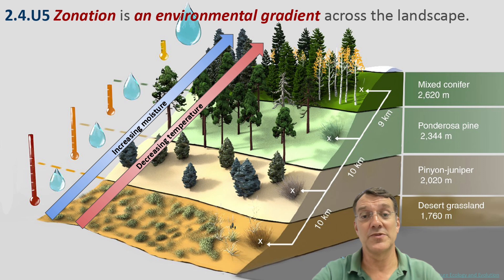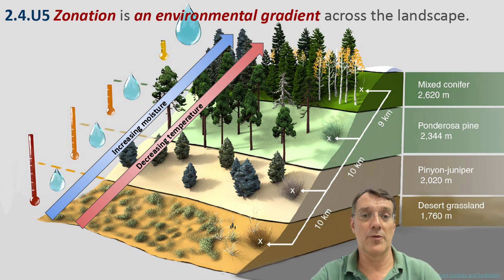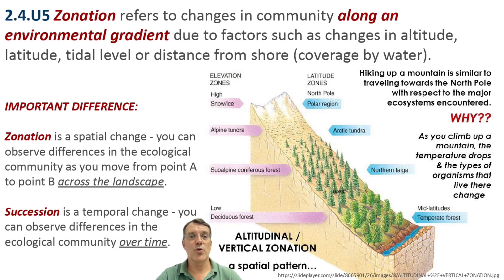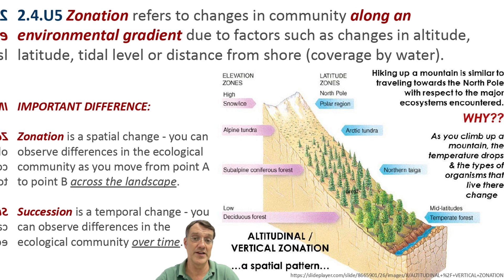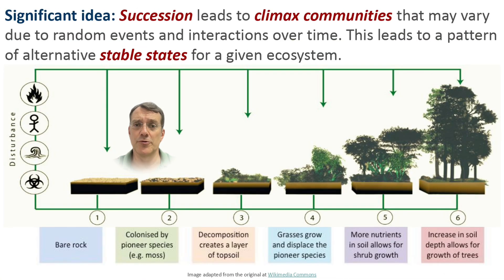Notice how ecosystems at higher elevations resemble those found at higher latitudes — moving up a mountain is climatically similar to moving towards the north or south pole. It's important to understand the difference between zonation and succession. Zonation is a spatial pattern observed across the landscape at a single point in time, while succession is a temporal change where communities evolve and change over time. The image shows vertical zonation on a mountainside, illustrating how elevation changes create distinct ecological communities.